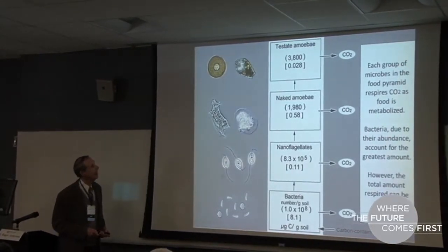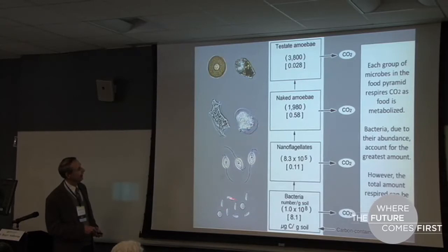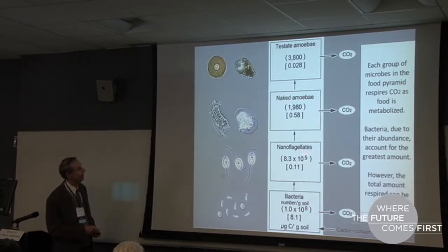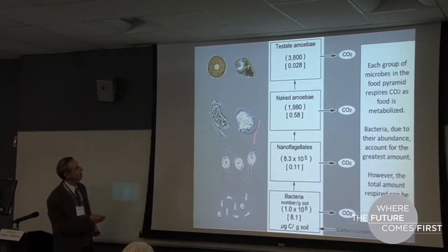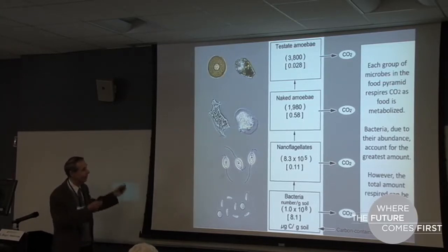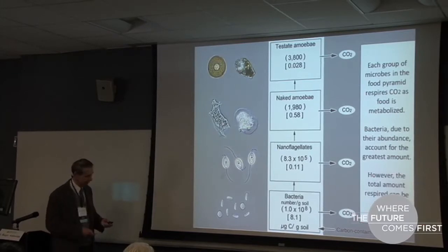If we look at how life in the soil is organized: bacteria are the source of food for all these microorganisms, very much like plants are for animals on the surface. Bacteria grow in very large numbers—about 10 to the 8 per gram of soil—and put out CO2. Nanoflagellates are smaller microorganisms that feed on bacteria. Then the amoebae feed on both, and the testate amoebae with their shells are also abundant. All of these are putting out CO2 into the atmosphere, and they proliferate as they have more available carbon sources.